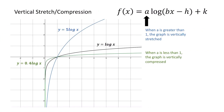If we change the value of a so that it's bigger than one, notice that the graph in blue is vertically stretched compared to the parent function in black. When we make a less than one, the graph in green is vertically compressed.